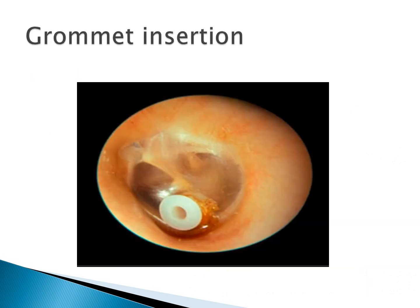When the fluid in the middle ear is very thick, or we want the myringotomy incision kept open for a long time, a grommet is inserted after myringotomy. This grommet is also called a tympanostomy tube or ventilation tube. It is placed in the myringotomy incision and acts as a channel for middle ear fluid to drain outside. After three to six months of insertion, the grommet is expelled on its own.